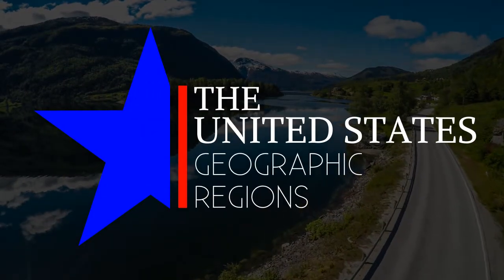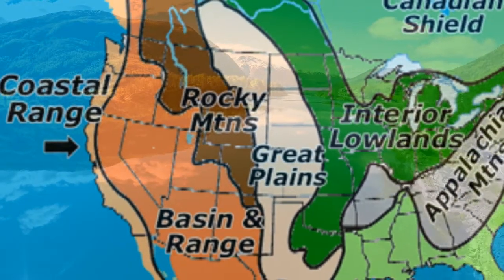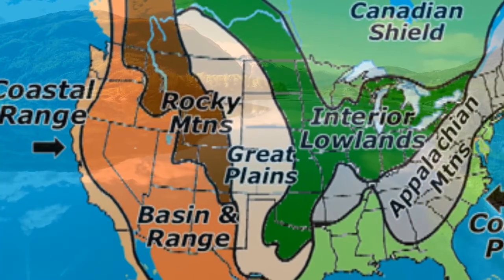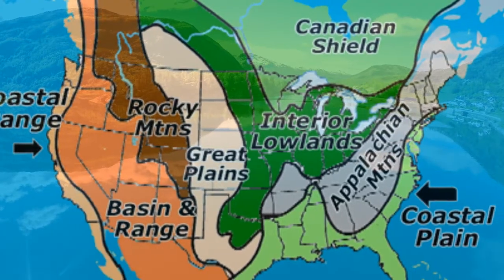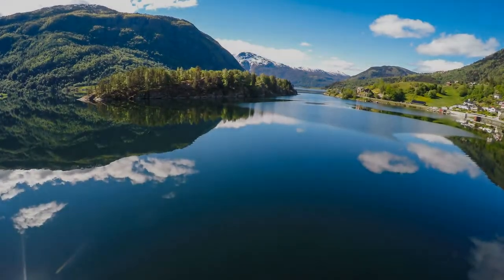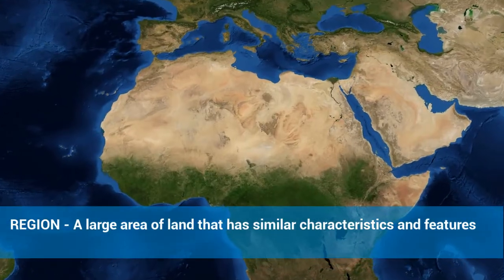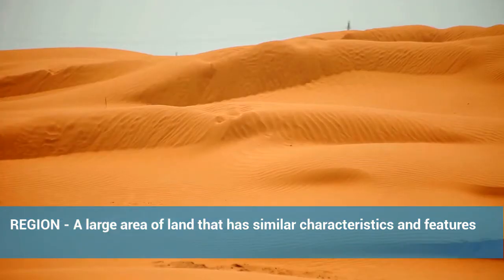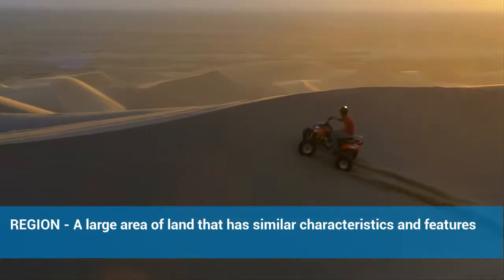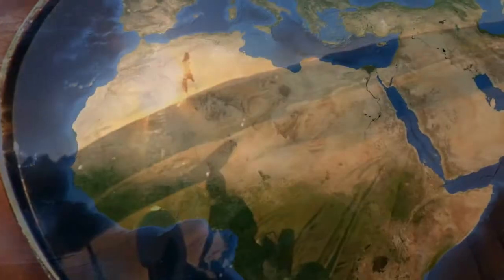The eight geographic regions of the United States. In the United States there are eight geographic regions. But wait — maybe we should start with what a region is. A region is a large area of land with similar characteristics or features, like the desert region of North Africa. No matter what part of North Africa you're in, look out the window and you'll see sandy desert, because all of those North African countries are in the desert region of the Sahara.